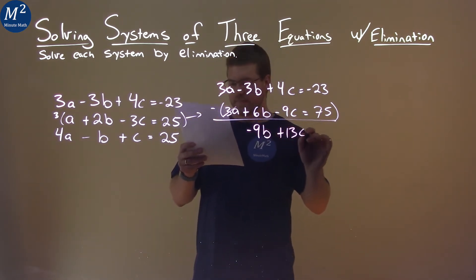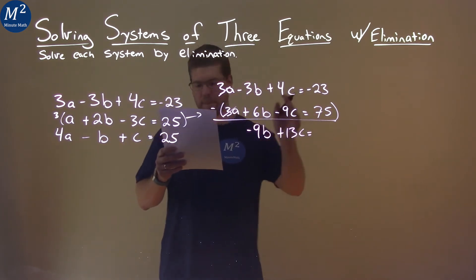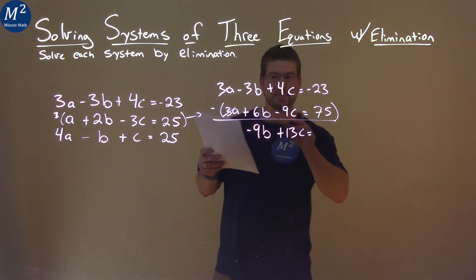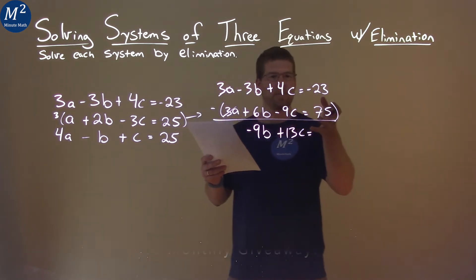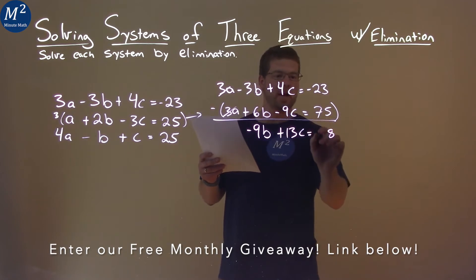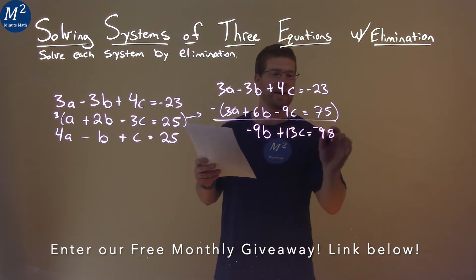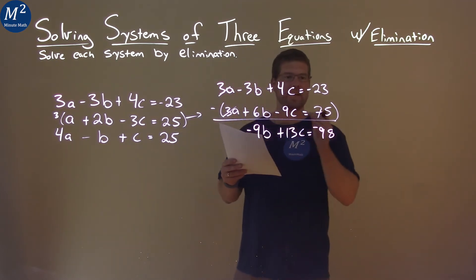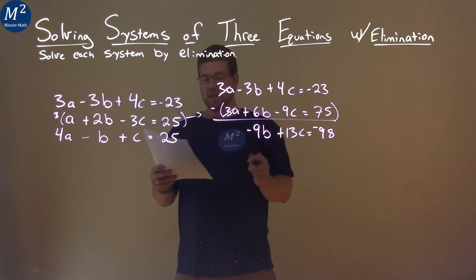Negative 23 minus 75, okay, negative 23 minus 75, it's kind of like adding them together, so we have an 8 here and then 9 here, so we have negative 98. So negative 23 minus 75 is negative 98, just double checking that. Yeah, okay, negative 98.